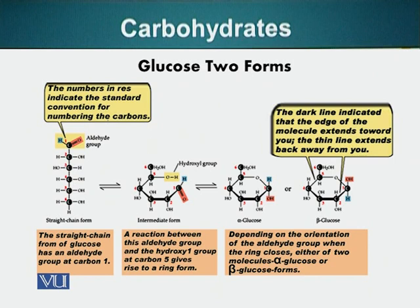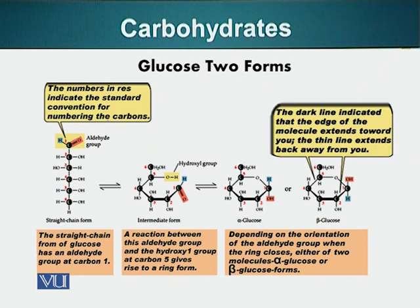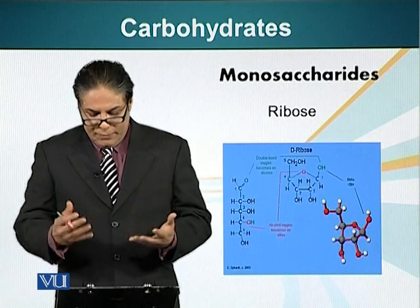Glucose, for example, can exist in two forms: a linear form and a circular form. When the glucose molecule becomes circular, it has two choices — it can adopt an alpha configuration or a beta configuration, depending upon the orientation of the aldehyde group when the ring closes. In alpha glucose, the hydroxyl group is pointing downwards, whereas in beta glucose, the hydroxyl group is pointing upwards. The consequence of this organization of atoms in the molecule is very significant, which will become clear in subsequent modules.